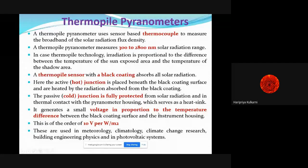The voltage is in proportion to the temperature difference, which is generally 10 microvolts per watt per meter squared. This voltage gives us the radiation. Thermopile pyranometers are used in meteorology, climatology, and climate change research - weather offices use them to provide solar irradiation measurements.